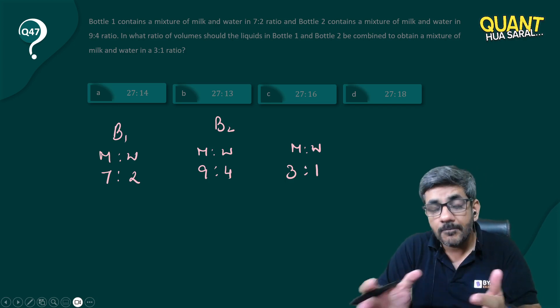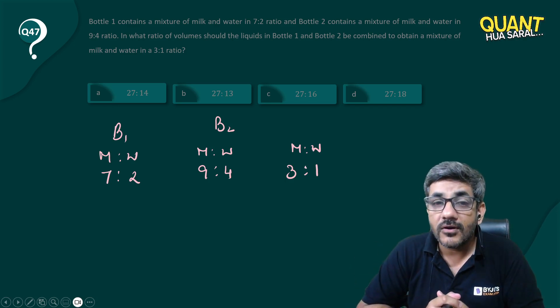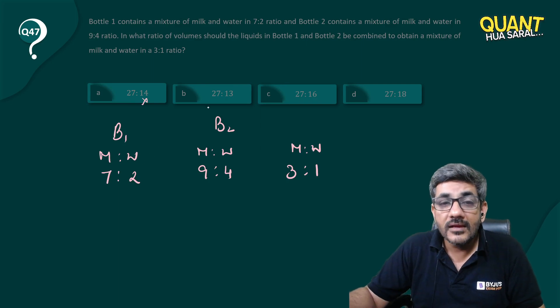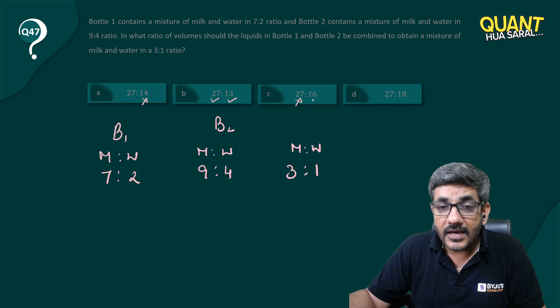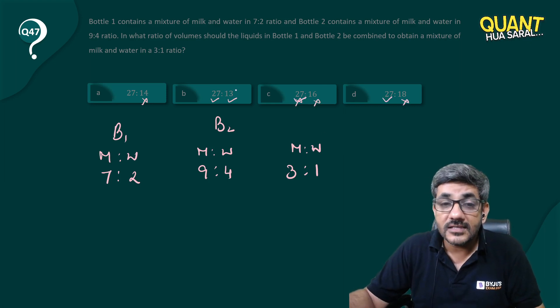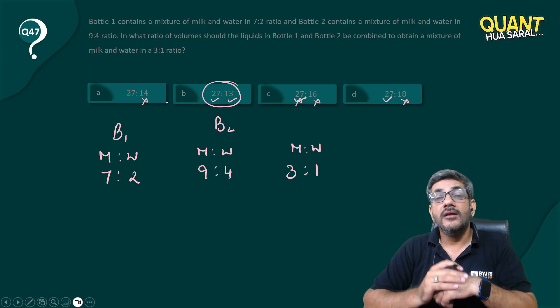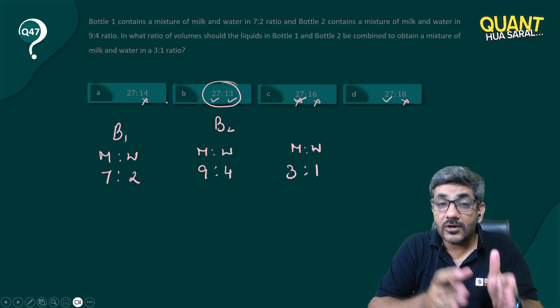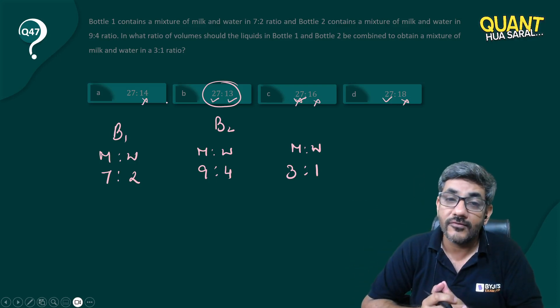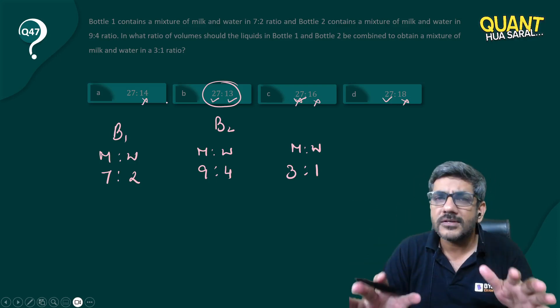So the quantity from Bottle 1 should be a multiple of 9, Bottle 2 a multiple of 13, and the final a multiple of 4. Looking at the options: the first one is a multiple of 9 but not 13, the second is not 13, the third is not 13. This is the only option in which the first is a multiple of 9, second is a multiple of 13, and total is also a multiple of 4.